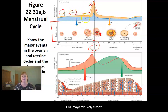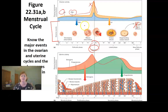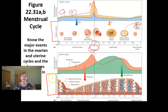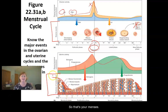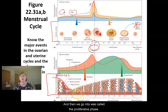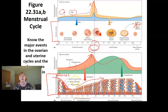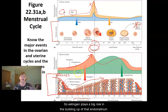FSH stays relatively steady because we're continually developing follicles for the next cycle. Now this bottom part of the graph shows the 28-day cycle of the actual lining of the uterus, or the endometrium. It sloughs off — that's how we begin our cycles. That's your menses, or your period, the menstrual phase. Then we go into the proliferative phase, where we build up this endometrial lining. Notice that as this lining is building up, we see a steady rise in estrogen, so estrogen plays a big role in building up that endometrium.